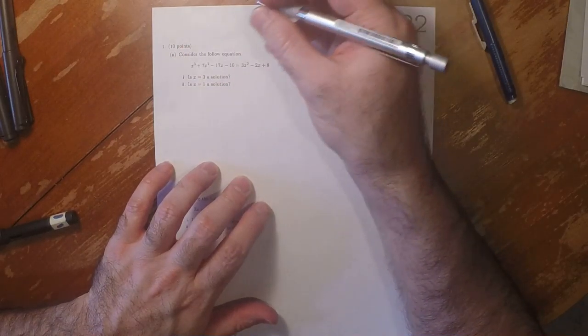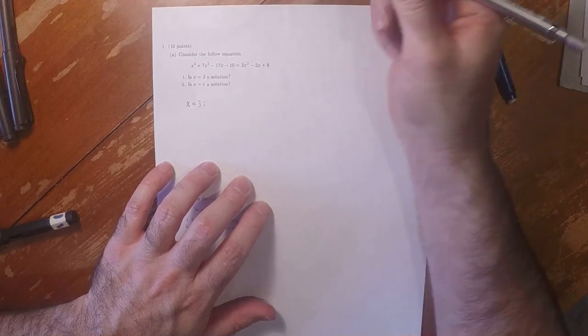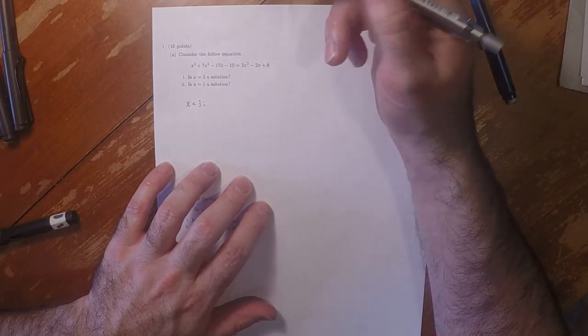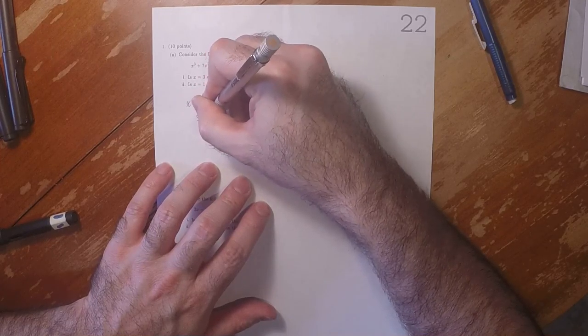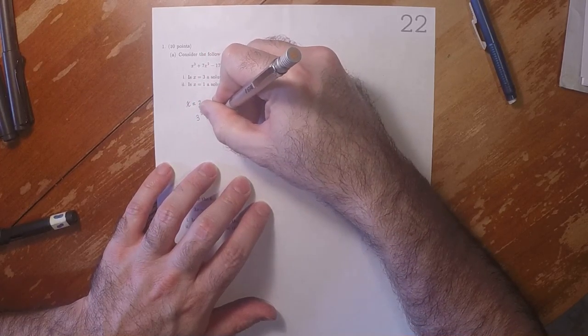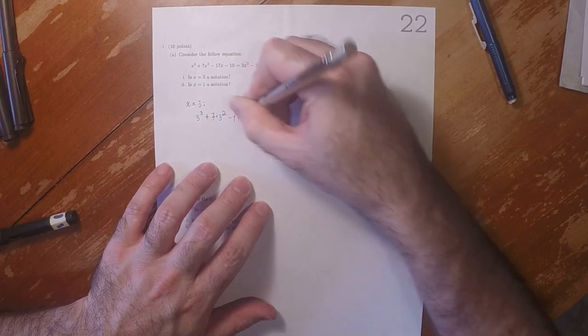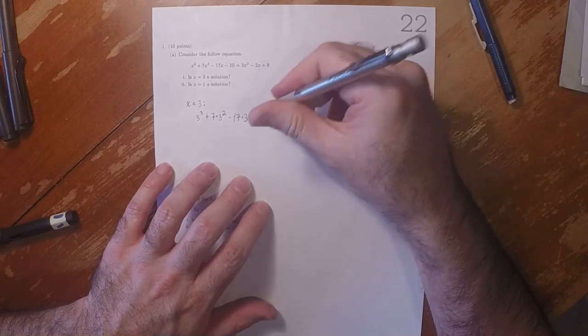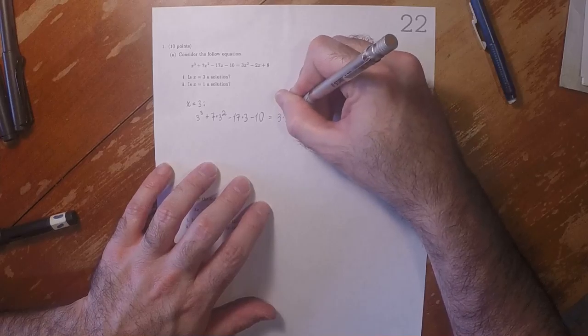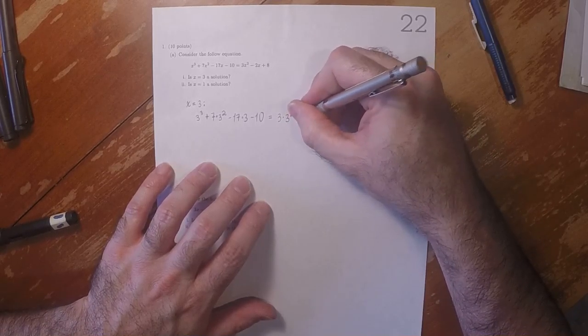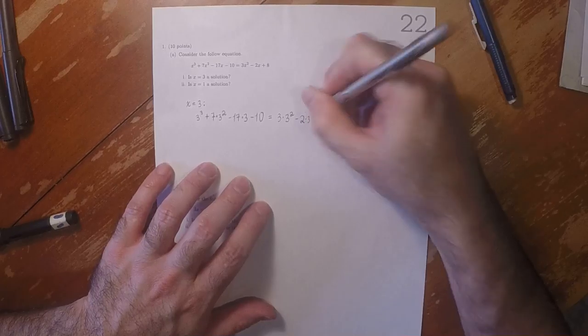So let's check x equal to 3. Let's plug it in. So as for the first term, that would be 3 cubed plus 7 times 3 squared minus 17 times 3 minus 10 is 3 times 3 squared minus 2 times 3 plus 8.